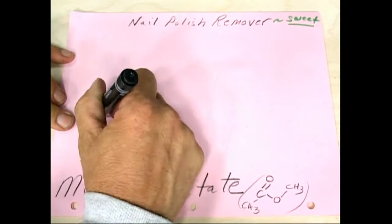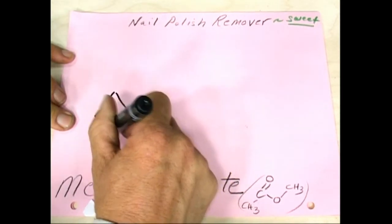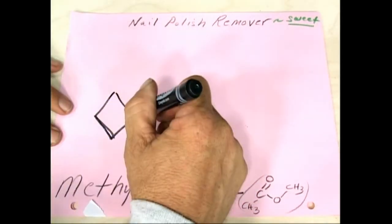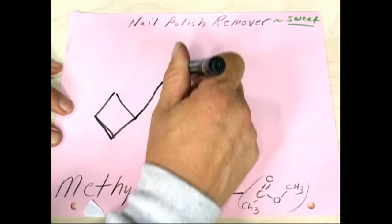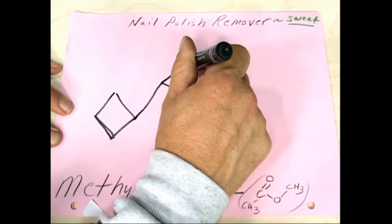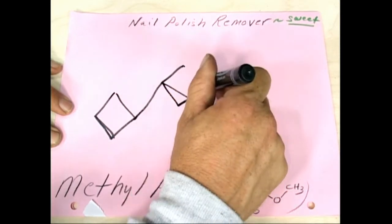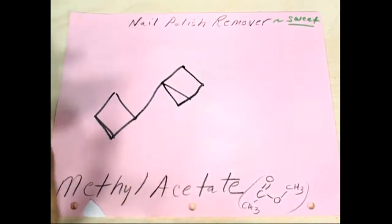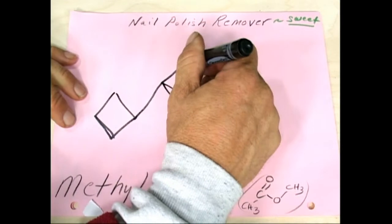So what do we got here? We'll try and spread this out here. We're going to have a methyl down here. It's going to go up to a carbon. I'm going to draw those like diamonds because I'm going sideways.